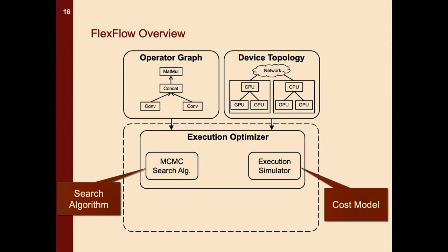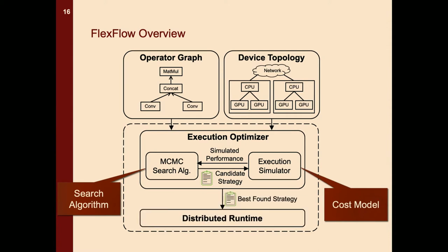We use MCMC — Markov Chain Monte Carlo — as our search algorithm in the execution optimizer, and we build an execution simulator as the cost model. The MCMC search algorithm iteratively generates candidate strategies that parallelize your operator graph on your device topology. These candidate parallelization strategies are sent to the simulator, which simulates the execution and sends the simulated performance back to the search algorithm. This feedback is used for generating future candidates. Once the search is completed, the best found strategy is sent to a distributed runtime to parallelize training.